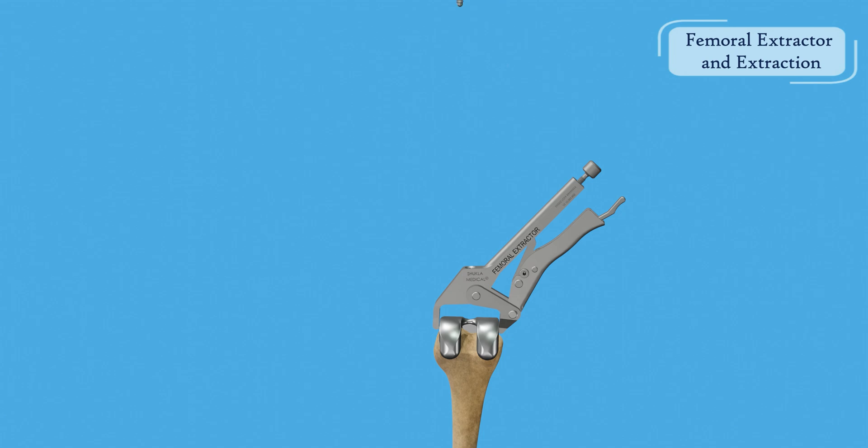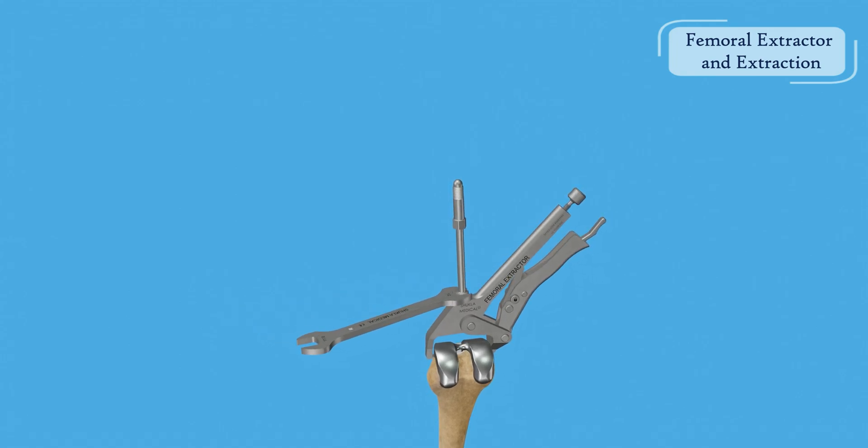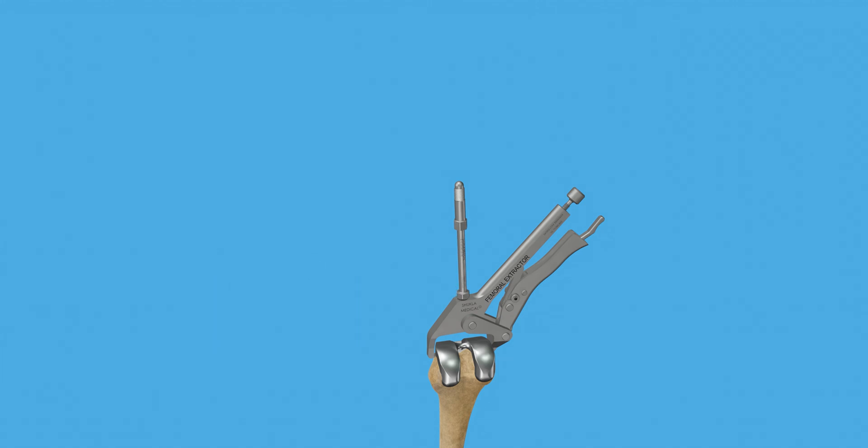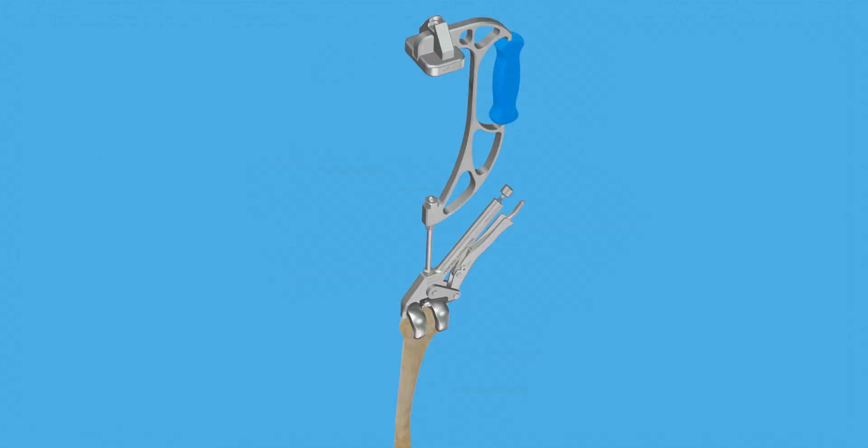Position the jaws across the component laterally and adjust to clamp down securely. Ensure the jaws are fully seated under the implant. Attach the strike plate frame to the rod. Secure the hex nut using a wrench. Ensure to extract in line with the implant.